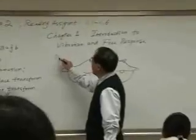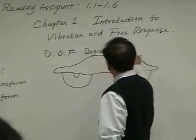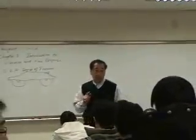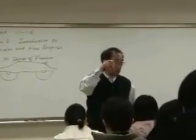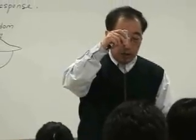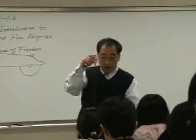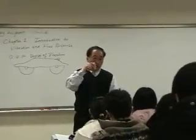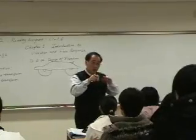We introduce the degree of freedom. Degree of freedom is the necessary number of coordinates that can completely describe the motion. Back to this simple case: how many coordinates do you need to describe this motion? This motion moves in one direction only, so the coordinate we need is one. If it oscillates in a plane, we need at least two coordinates. If it oscillates in three dimensions, we need three coordinates.